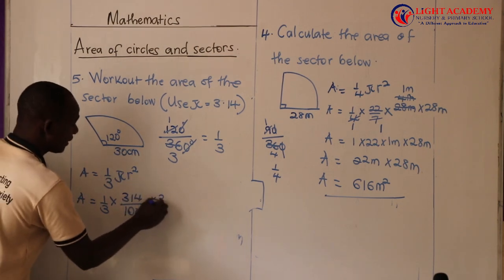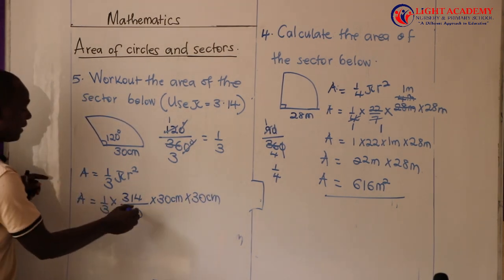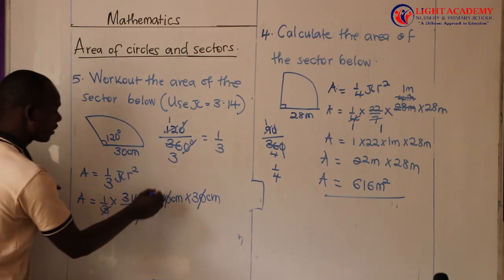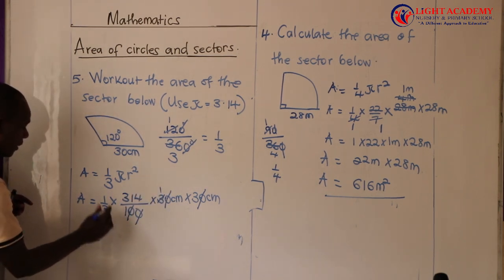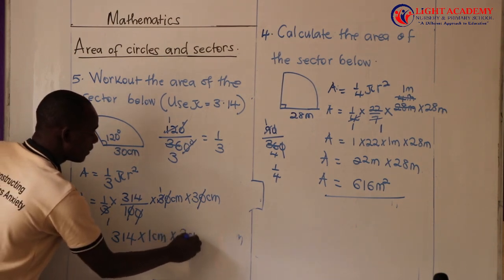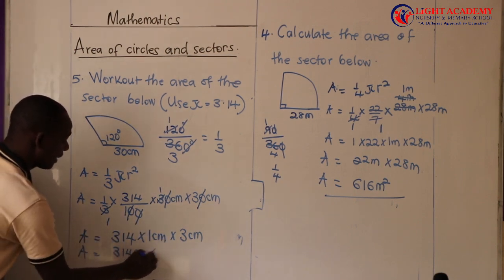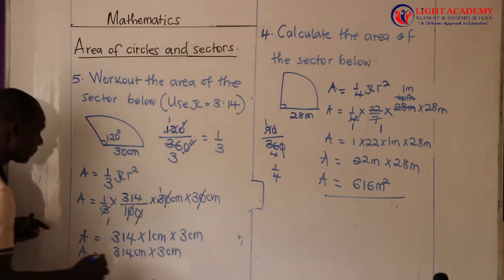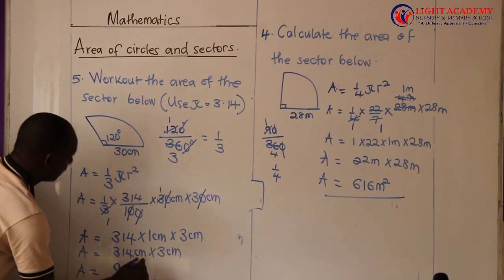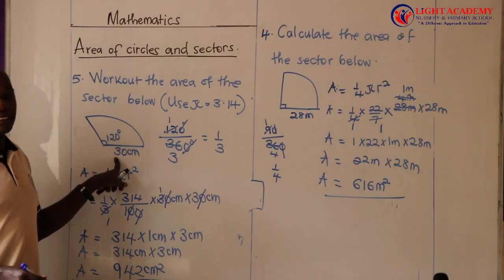So area equals one third times 314 over 100 times 30 centimeters times 30 centimeters. Reducing: the zeros in 30 and 30 cancel with the two zeros in 100, and 3 over 3 gives 1, leaving 1 times 314 times 1 centimeter times 3 centimeters. So area equals 314 times 3, which gives 942 centimeters squared. That is the area of this sector where the angle is 120 degrees and the radius is 30 centimeters.